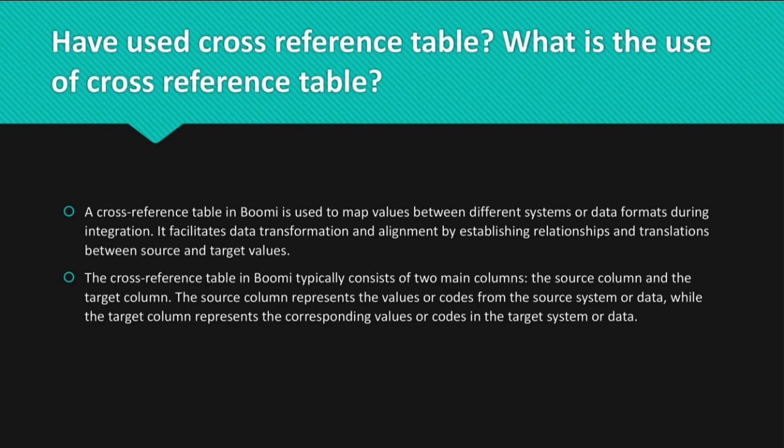The cross-reference table in Bumi typically consists of two main columns: the source column and the target column. The source column represents the values or codes from the source system or data, while the target column represents the corresponding values or codes in the target system or data.